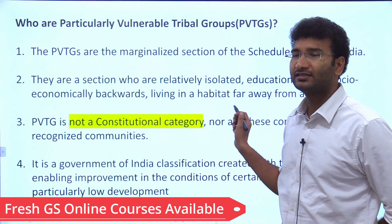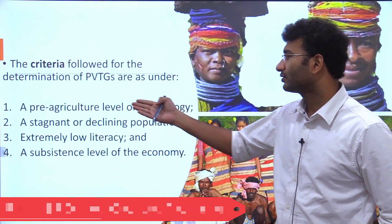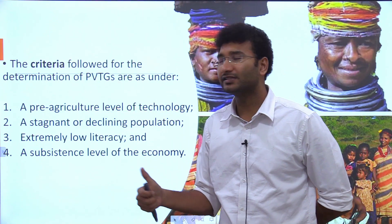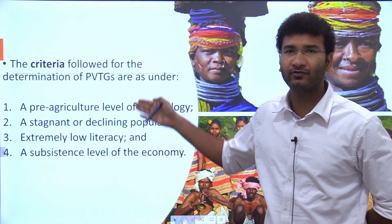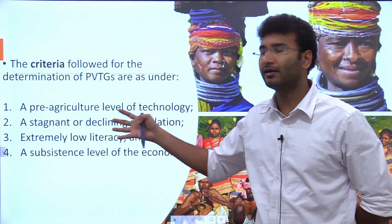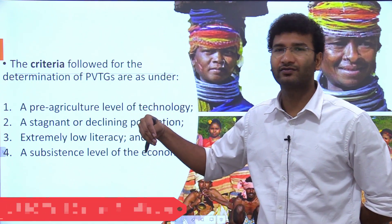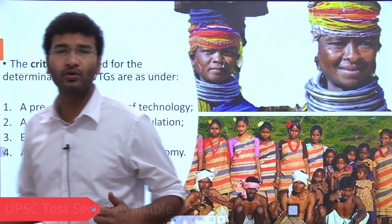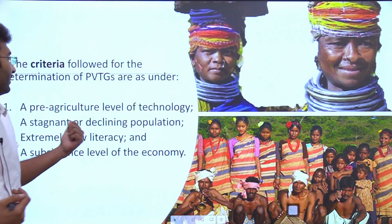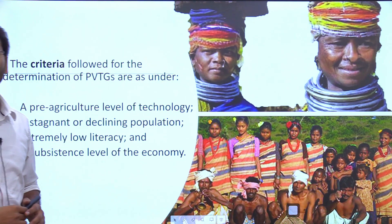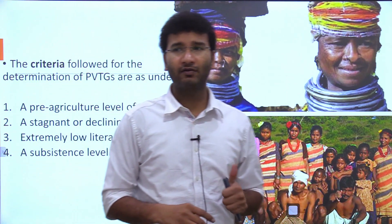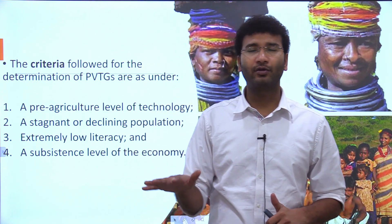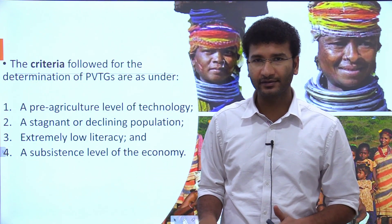The four PVTG criteria important for MCQ examinations are: one, pre-agricultural level of technology; two, stagnant or declining population; three, extreme low level of literacy; and four, subsistence level of economic activity.